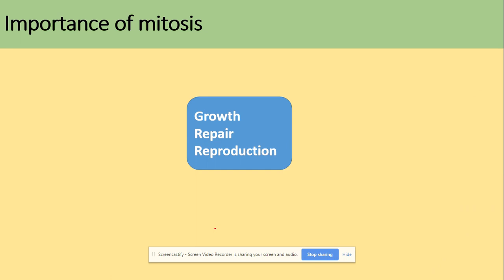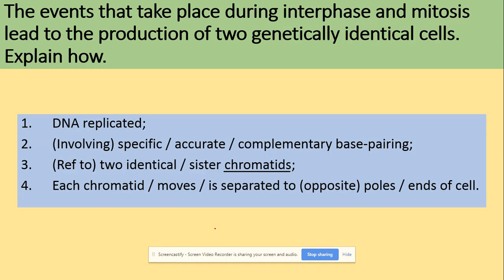The main importance of mitosis is growth — an increase in cell number — repair of tissues, and asexual reproduction. The events of interphase and mitosis lead to the production of two genetically identical cells. DNA is replicated during interphase via complementary base pairing: guanine binds with cytosine via three hydrogen bonds, and adenine with thymine via two hydrogen bonds. The chromosome appears as two sister chromatids joined by a centromere, and each chromatid moves to the opposite poles of the cell.